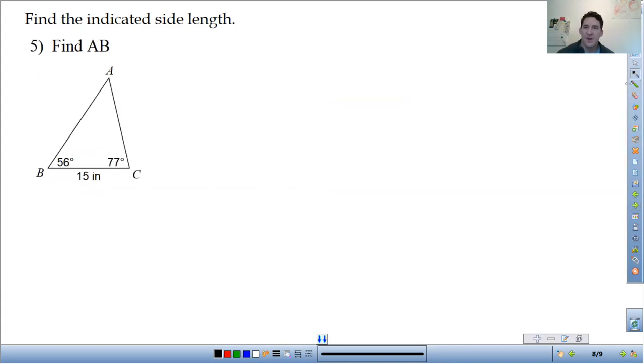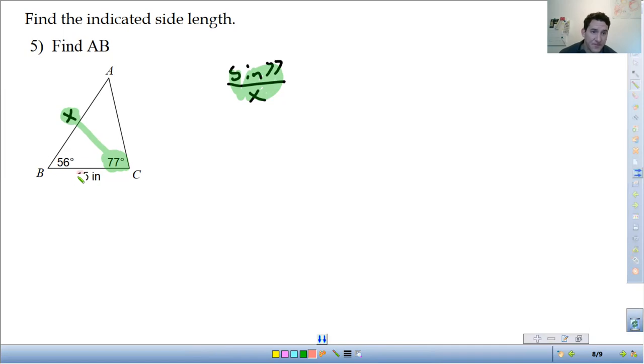Find AB. So AB, A to B is this side length here. This is what we're trying to find. So I'm going to start by setting up the ratios. So I have the X separate ratio with the angle across. So it's going to be sine of 77 over X, right? And then, oh, this one's a little bit different. Here, we don't know the angle across from it, right? So we actually have to find the angle across from it. To do that, what we need to remember is the angles inside a triangle add up to 180.